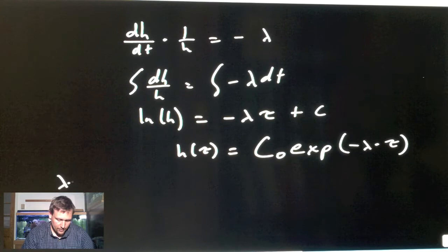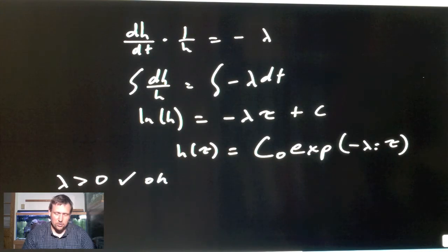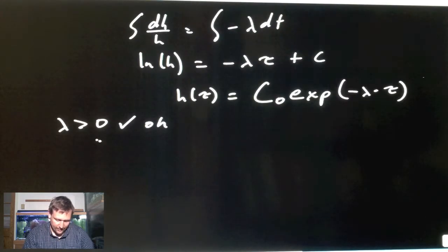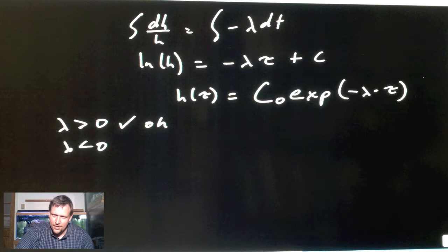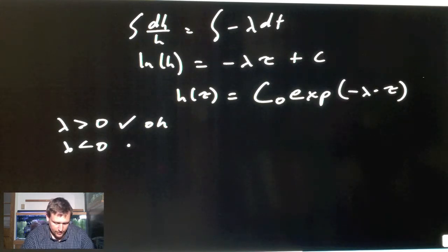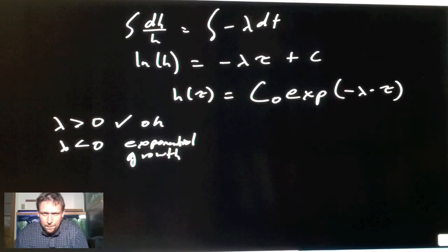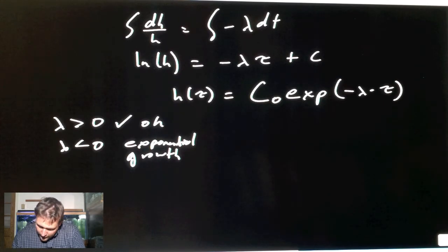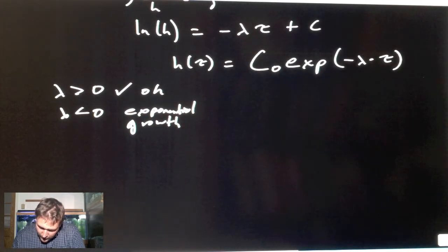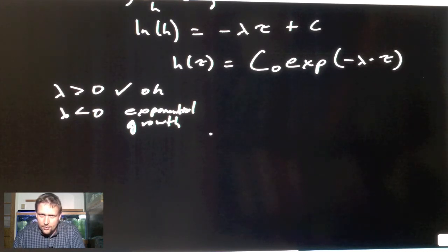If λ was greater than zero, it's okay—this exponential term will decay in time. If this λ is less than zero, well the exponential of a positive term times the dimensionless time, this thing is going to blow up in your face, it's just going to keep going and going with no end in sight. So this is exponential growth.